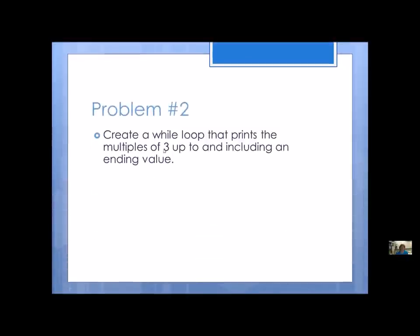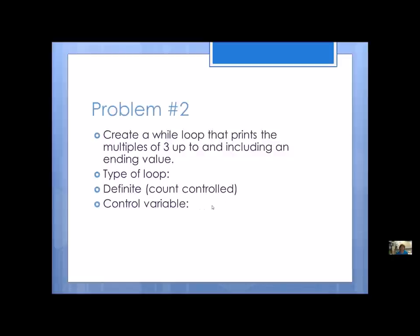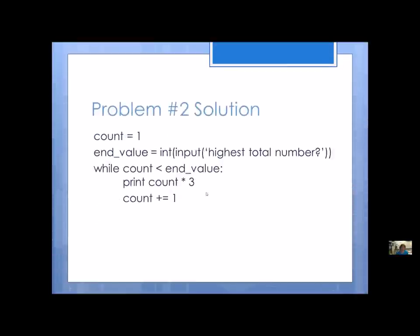Problem number two: create a while loop that prints the multiples of three up to and including an ending value. I'm going to start at zero or one, and I've got an ending value. Since I know I'm going from one to the ending value, this is a definite, count-controlled loop. The control variable is count, and the condition is count less than ending value plus one — the plus one is because I want to include it. Or I could say count less than or equal to ending value. Here's a possible solution.